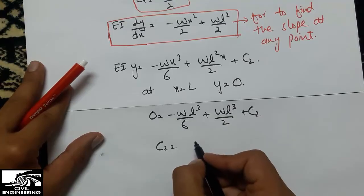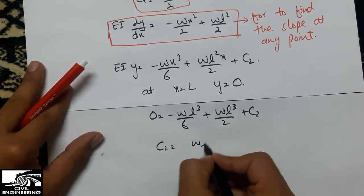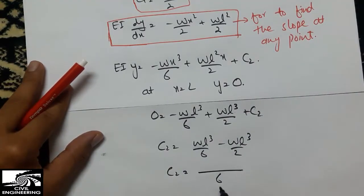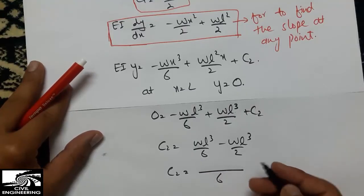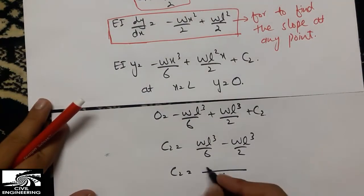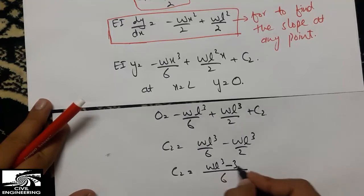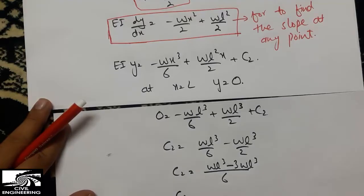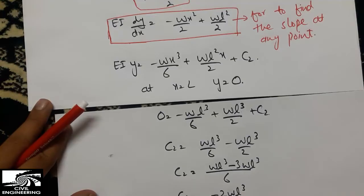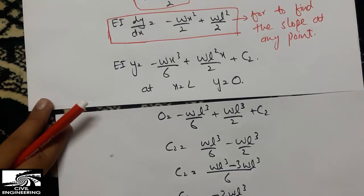Simplifying to find C2: we have plus WL³ divided by 6 minus WL³ divided by 2. This gives us WL³ minus 3WL³, all divided by 6, which simplifies to minus 2WL³ divided by 6. Therefore C2 equals minus WL³ divided by 3.